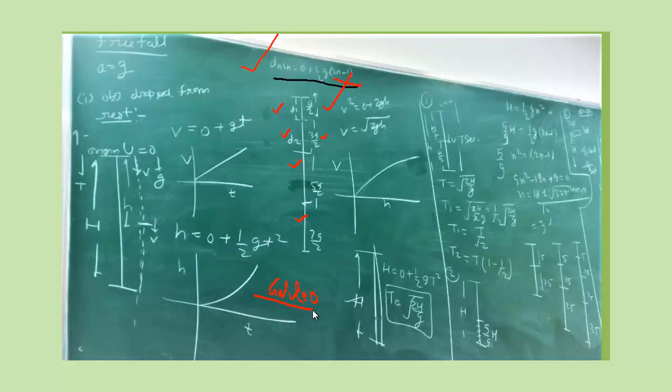In equal time intervals, if we take one second each, it's g by 2, 3g by 2, 5g by 2, 7g by 2, 9g by 2. The ratio comes to 1 is to 3 is to 5 is to 7. If we take g equals 10, how many meters? In the first second when we drop an object, it's 5 meters, g by 2. 3g by 2, 3 times is 15, then 25, then 35, then 45, then 55. When any object is dropped in free fall, in equal time intervals of one second each it travels 5, 15, 25, 35, 45 meters. Every object in the world when dropped travels 5 meters in the first second.